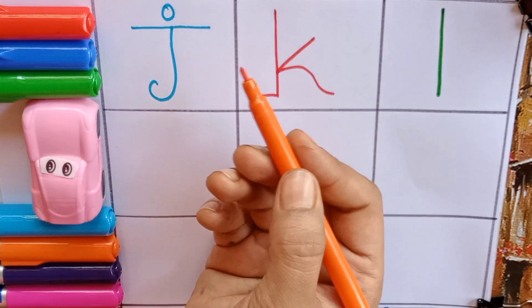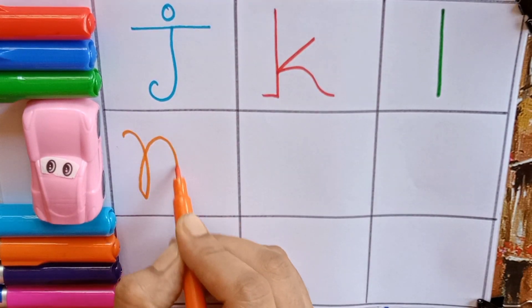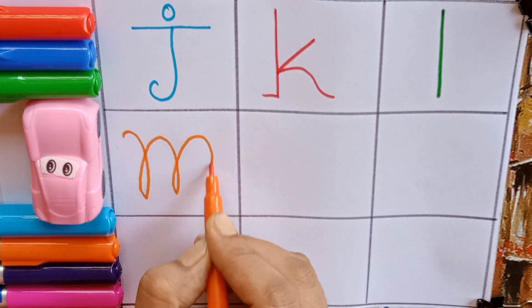Orange M, M for mongoose, M for also mouse.